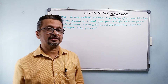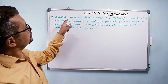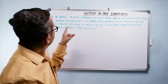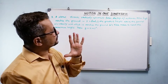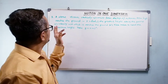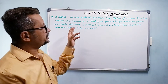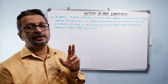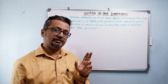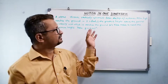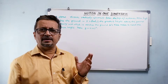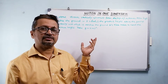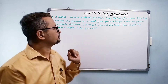Now some problems on motion under gravity. A stone is thrown vertically upwards from the top of a tower 85 meters high. It reaches the ground in five seconds. Find the greatest height above the ground, velocity with which it reaches the ground, and time taken to reach the maximum height. Take g equal to 10 meter per second square, as given in the problem.